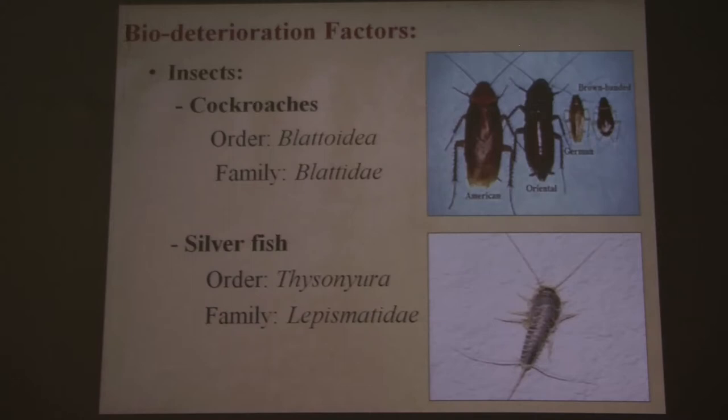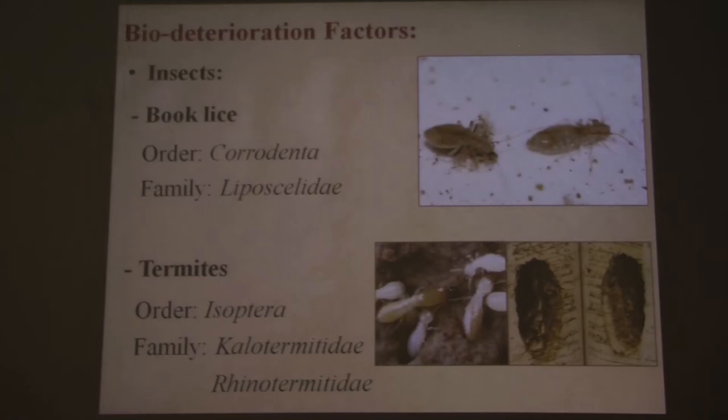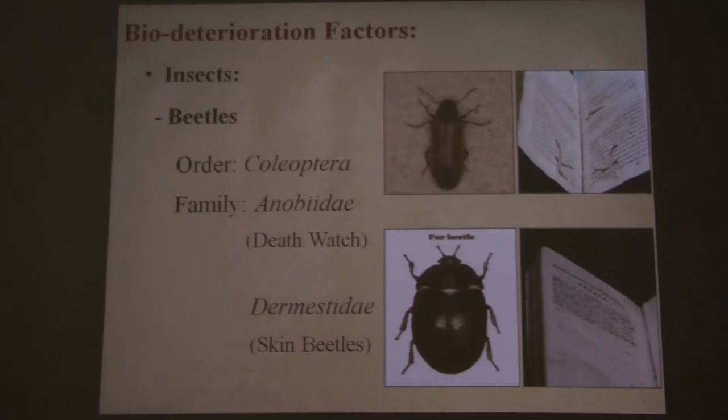We start with insects, of which there are a lot that affect paper: cockroach and silverfish, book lice, and termites which cause severe damage to paper, especially in areas in North Africa or Asia. We also have two families of beetles — Anobiidae and Dermestidae — which also cause severe damage to paper.